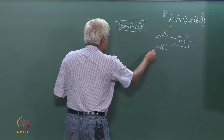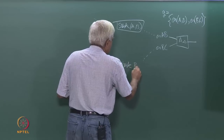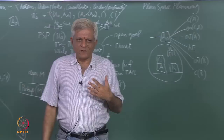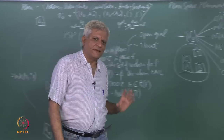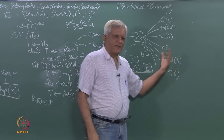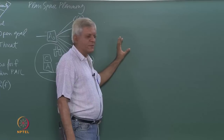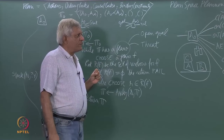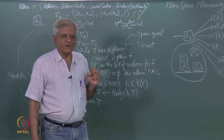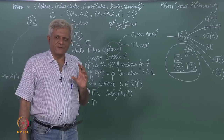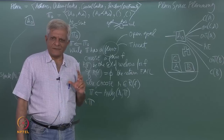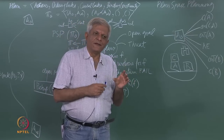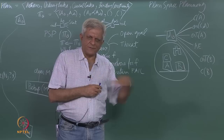Because plan space planning resolves open goals starting from the goal state, it still has a flavor of backward reasoning. However, there is no fixed order of search. An interesting feature is that in state space planning, the selection of an action and its positioning were done simultaneously. In plan space planning, we separate the task of selecting an action from imposing an ordering on actions — these are done independently.